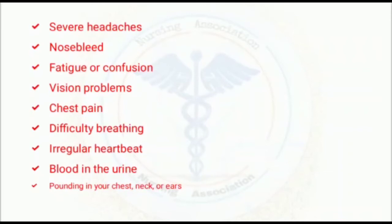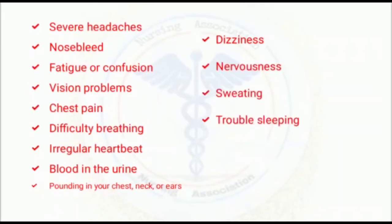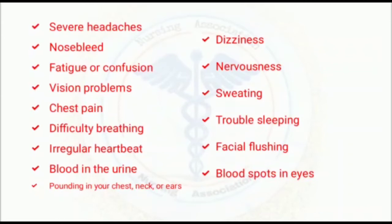These symptoms occur because the arterial walls are under higher blood pressure. Additional features include dizziness, nervousness, sweating, trouble sleeping, facial flushing, and blood spots in the eyes. Many of these — such as nosebleed, blood spots in the eyes, dizziness, and blood in urine — are caused by small capillaries breaking down due to the high pressure. Dizziness, nervousness, sweating, trouble sleeping, and breathing difficulty result from the very high pressure in the arterial walls.